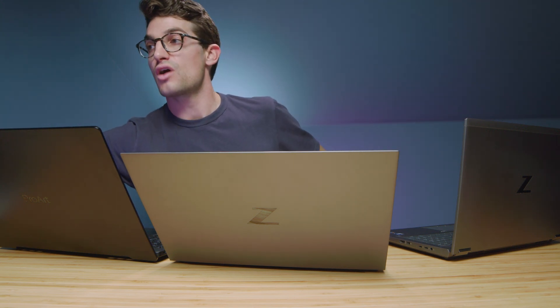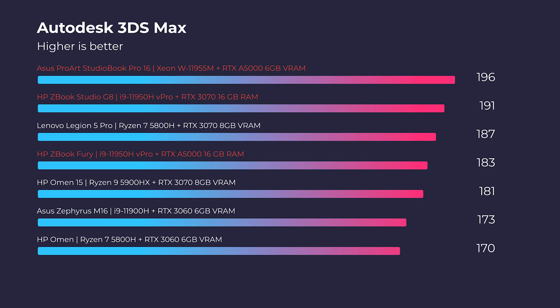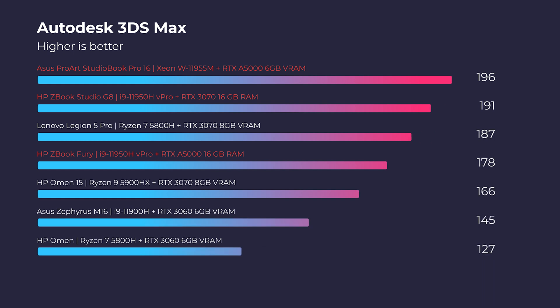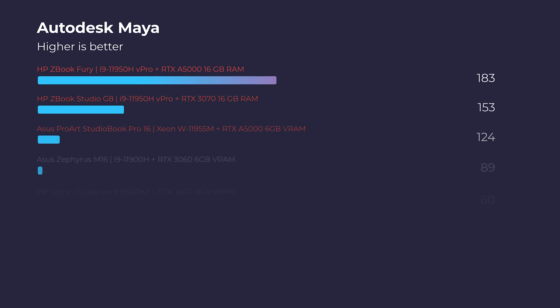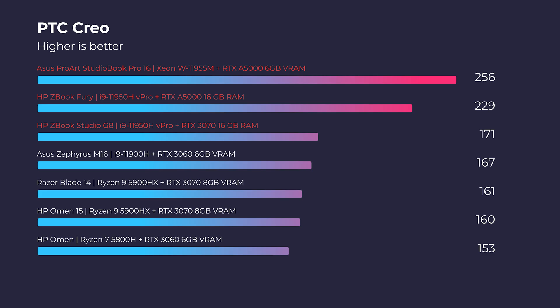First, in Autodesk 3DS Max, the Asus ProArt StudioBook wins out, but not by a lot — they're pretty much on an even playing field. Moving on to Autodesk Maya, the Asus StudioBook falls a little bit behind and the ZBooks pull ahead. Then in PTC Creo, the Asus StudioBook creeps back up and the Fury falls down the charts a little — I was surprised by that, but I ran these benchmarks multiple times and that continued to be the case each time.